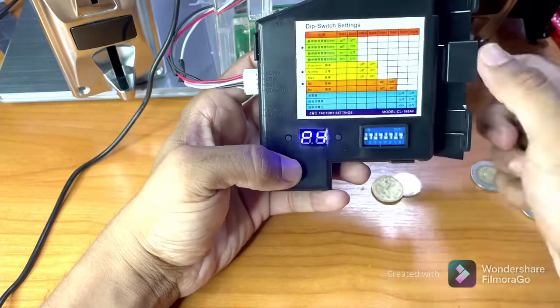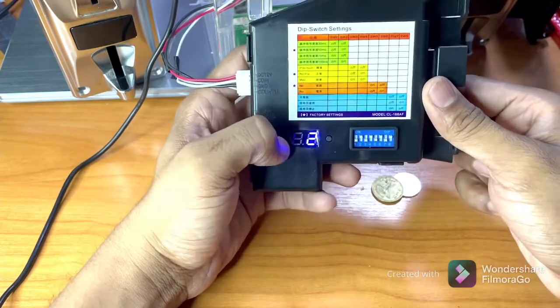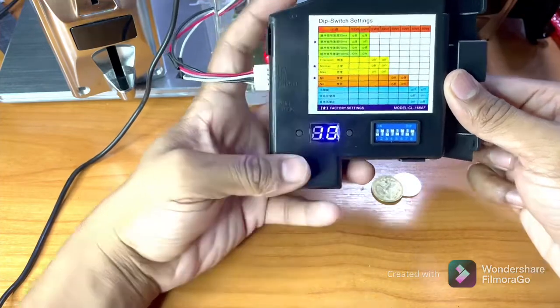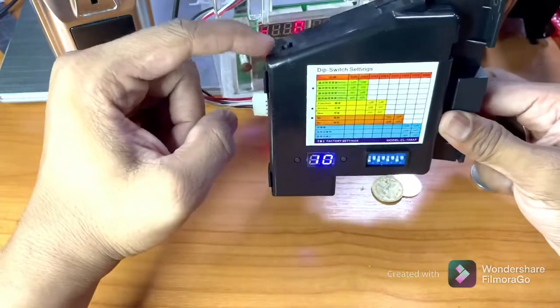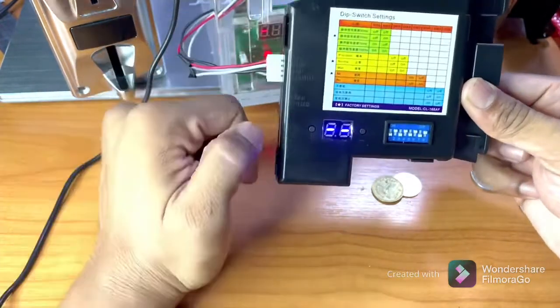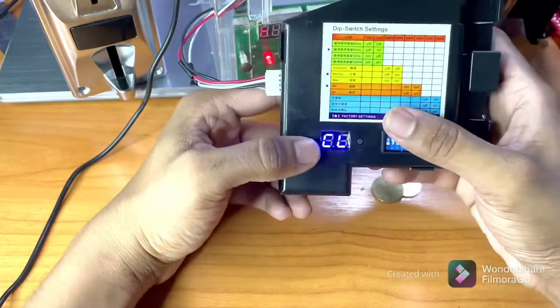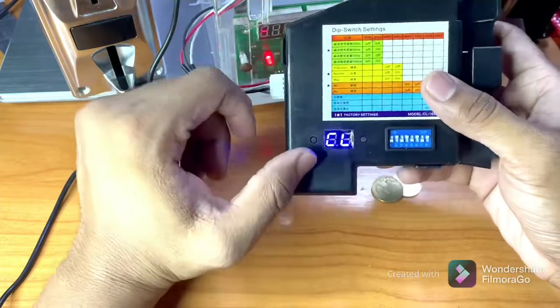Next is P4. You have to set it to 10 for 10 bath coin. Then press this top button.